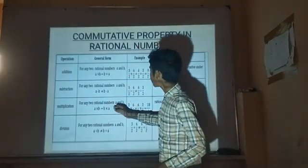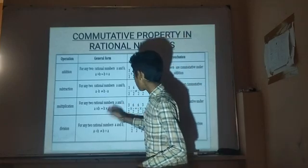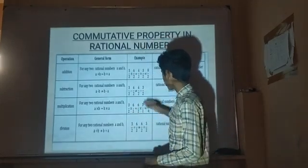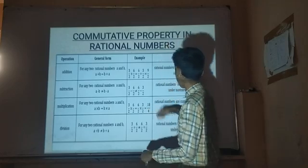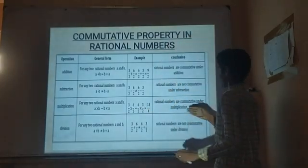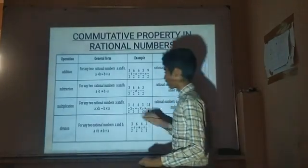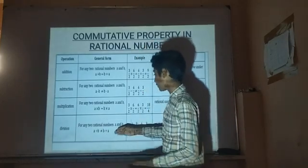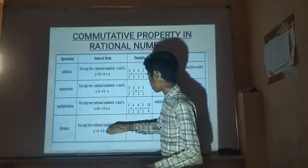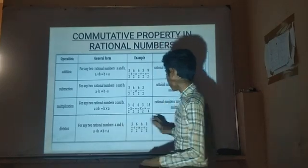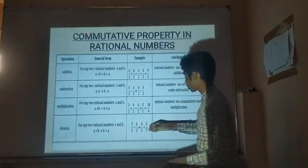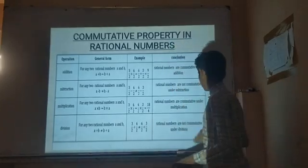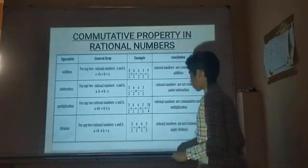Commutative Property — Multiplication: for any two ratio numbers A and B, A into B is equal to B into A. For example, 3 by 2 into 6 by 2 equals 6 by 2 into 3 by 2, both equal to 18 by 4. Ratio numbers are commutative under multiplication. For Division: A divided by B is not equal to B divided by A — for example, 3 by 2 divided by 6 by 2 is not equal to 6 by 2 divided by 3 by 2. So ratio numbers are not commutative under division.